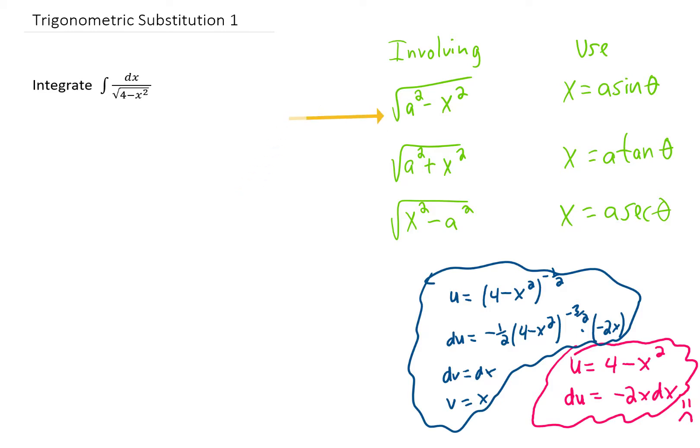The tip-off is that one of these three forms that I've written down over here is somewhere in the integrand. More specifically, you'll notice that this 4 minus x squared is an a squared minus x squared with a equals 2. So our integral involves this term.